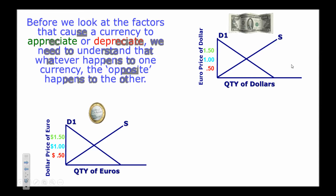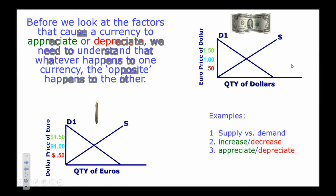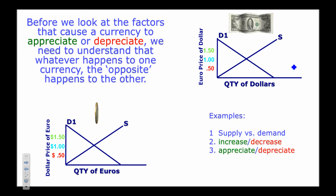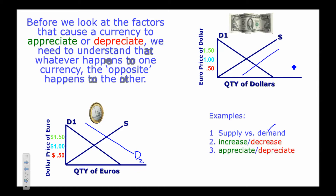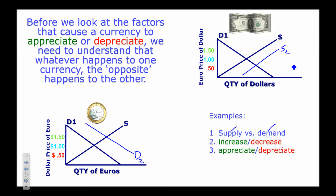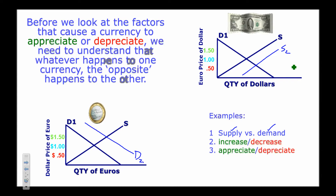Sometimes you'll be asked about one currency but given information about a different one. If you understand what's happening with one currency, the exact opposite happens with the other. For example, if I go on vacation in Europe, I first have to buy euros — the demand for euros increases. At the same time, the supply of the dollar in the foreign exchange market increases.